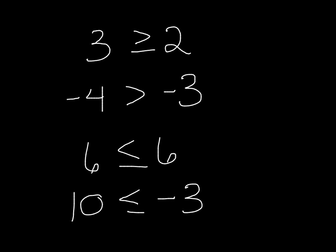On the first section, you're going to be deciding whether an inequality is true or false. Looking at the first example up here, 3 is greater than or equal to negative 2. Remember that if it's open this way, that means greater than. The line underneath means or equal to.